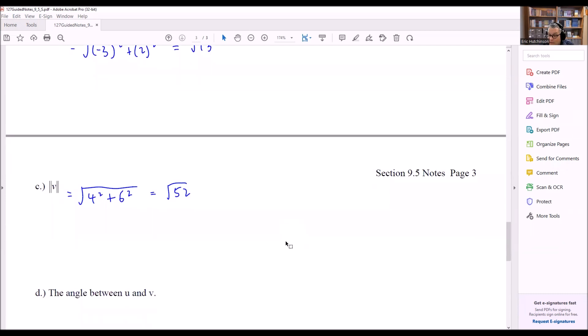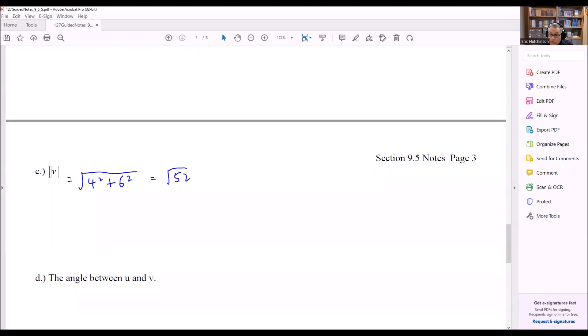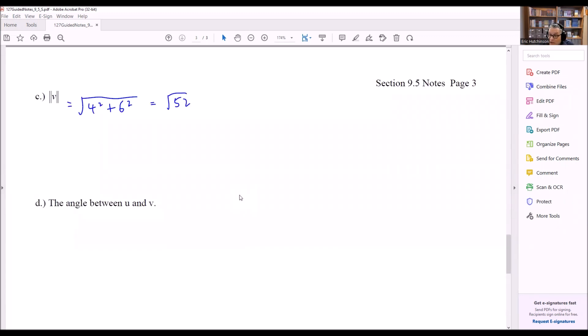For part d, we want to find the angle between u and v. For this, you want to use the formula for that one, which I'll write out here. So that was given in this section. It's going to be cosine theta equals the dot product, u times v, over magnitude of u times the magnitude of v. That's the formula that you're going to use all the time to find the angle between u and v. It's the same formula every single time you're going to use for that.